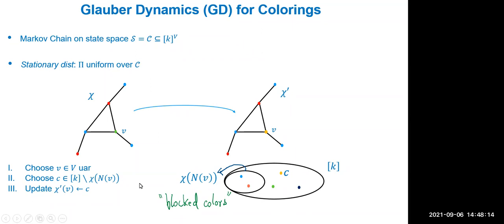The two sources of randomness in global dynamics are: first, choosing vertex v uniformly at random; second, choosing a color outside the block set. For both chains, even starting from different states, you use the same randomness. Both chains update the same vertex, and you supply a uniformly random permutation sigma on K to both chains. Each chain then picks the first color in the permutation that does not occur in the neighborhood of v.